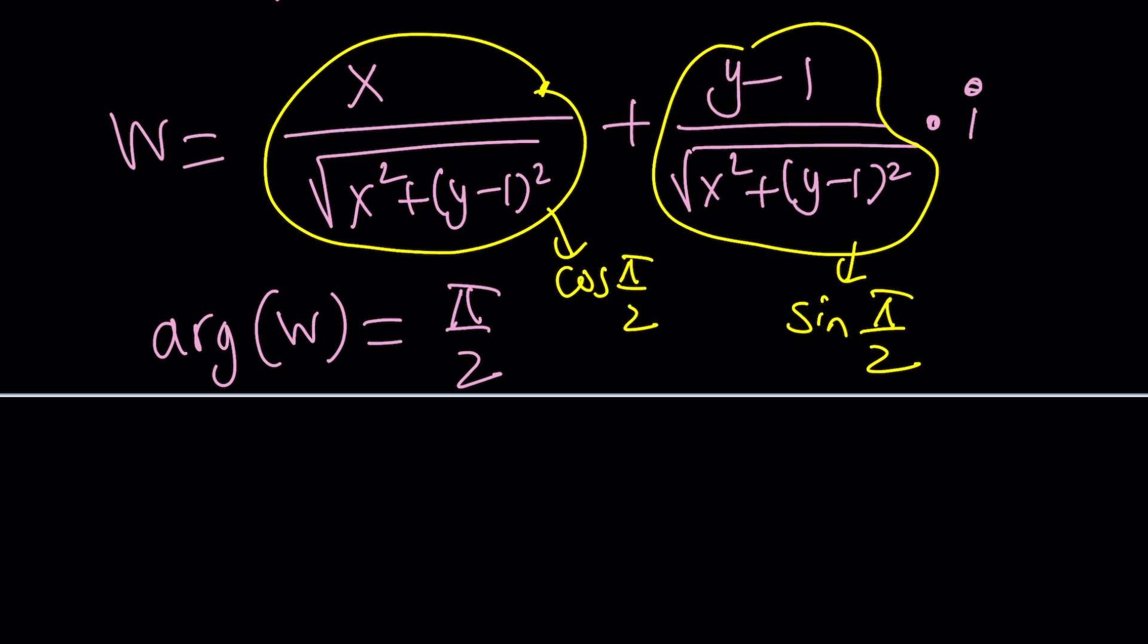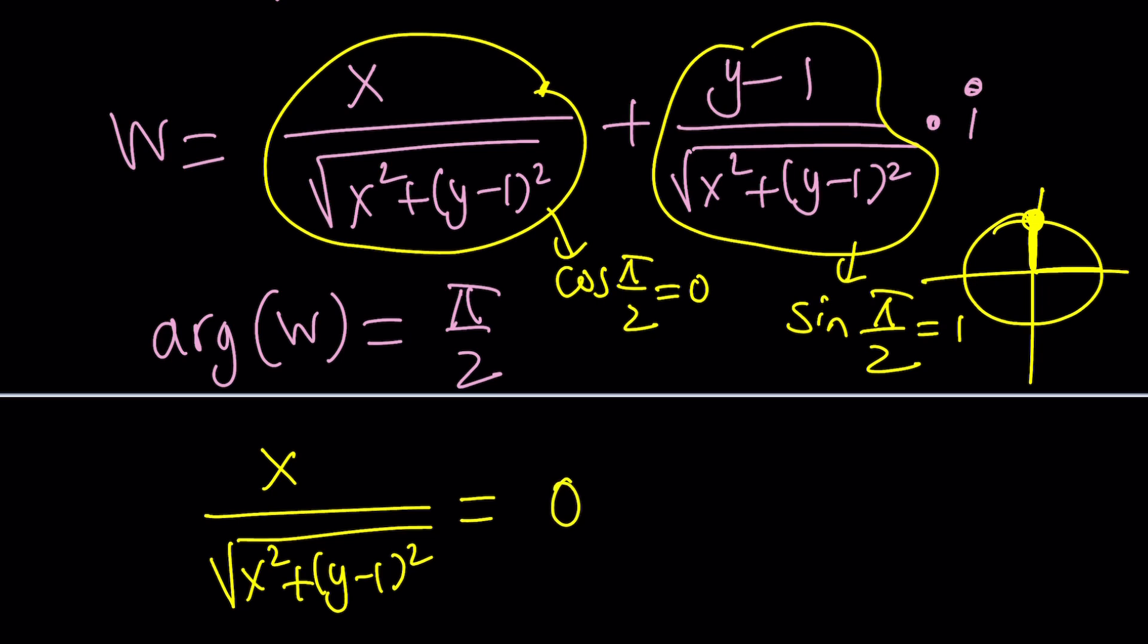We're going to do some crazy stuff here. Not too crazy, a little crazy. So what does that mean? It means that cosine pi over 2, actually I know cosine pi over 2. It's zero, because cosine is here, sine is here. So cosine of pi over 2 is 0, sine of pi over 2 is 1. Let's write it down so we don't forget. This should be zero. That means x is zero. Nice. So that means the real part is boom, gone.